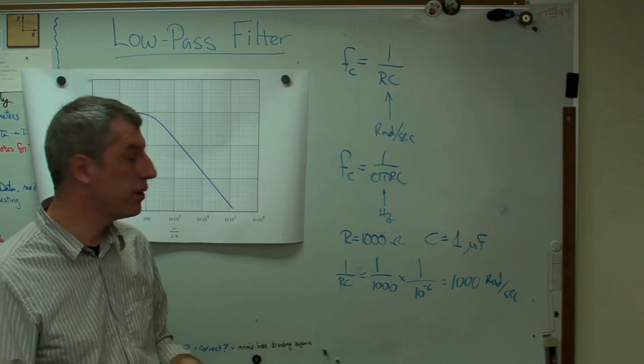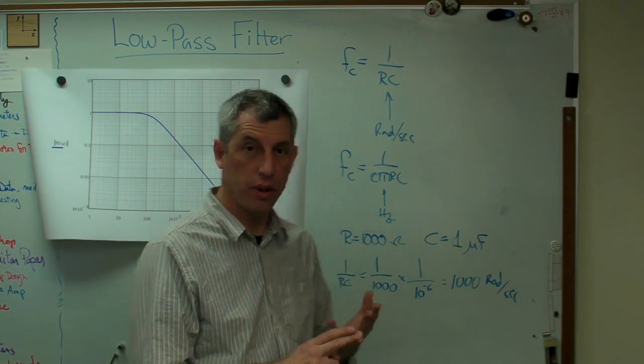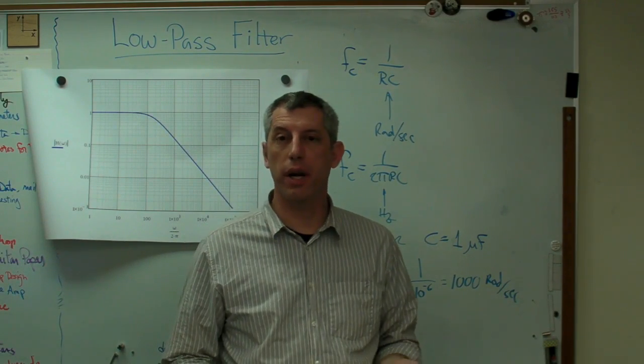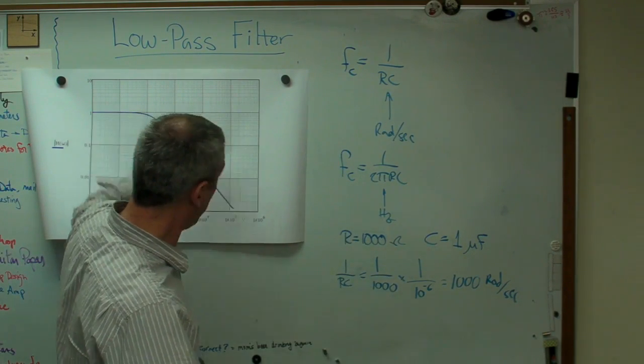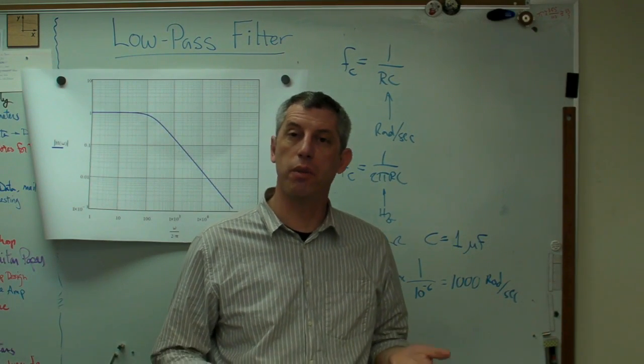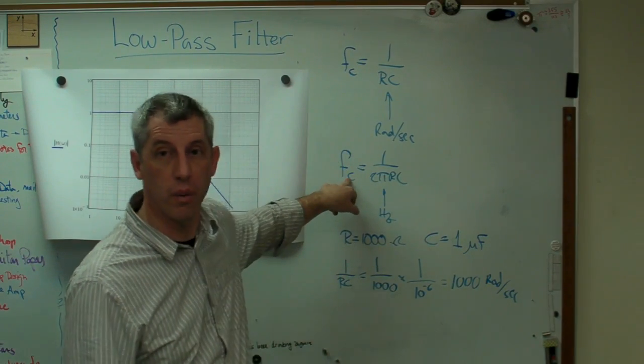So there you go. This is a low-pass filter. We know what they are. We know what they do. We know how they act. And we now have an expression that we can actually plot now, and we can calculate the cut-off frequencies. So you can pick resistances and capacitances that put that point where you need it.